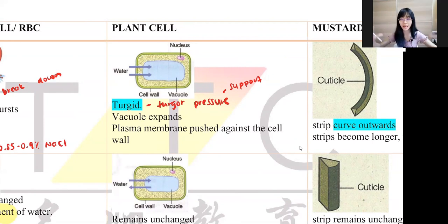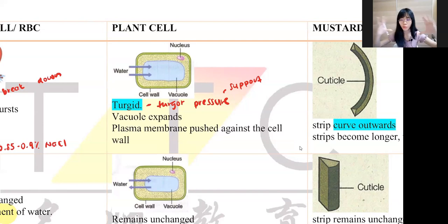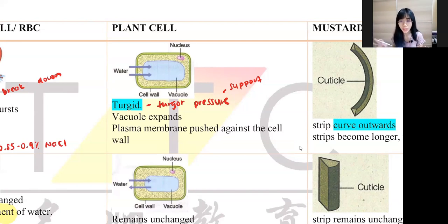When the cell expands in size, we call this turgid. The plasma membrane will push against the cell wall because it becomes bigger and bigger, but it will not burst — it just pushes against the cell wall because it has a cell wall.